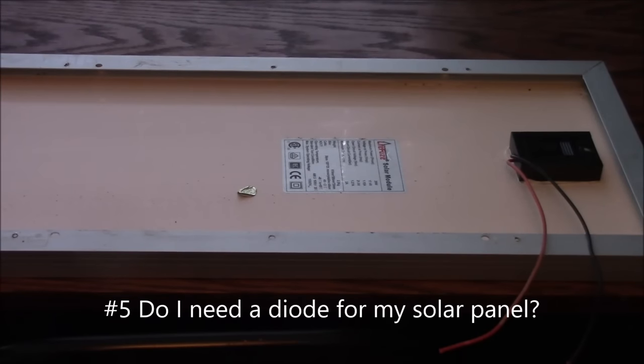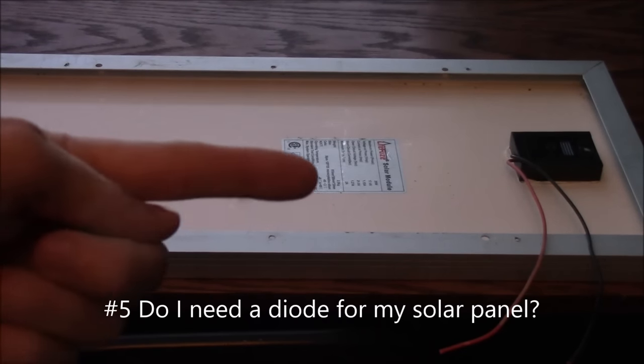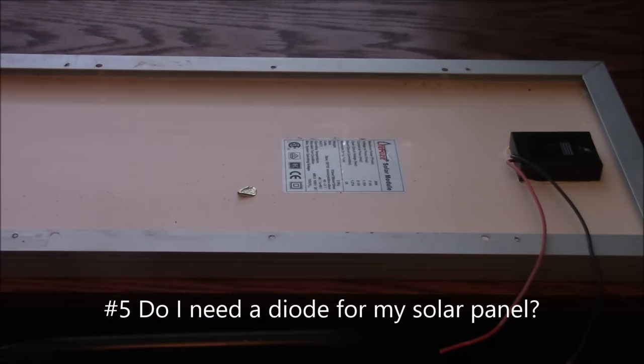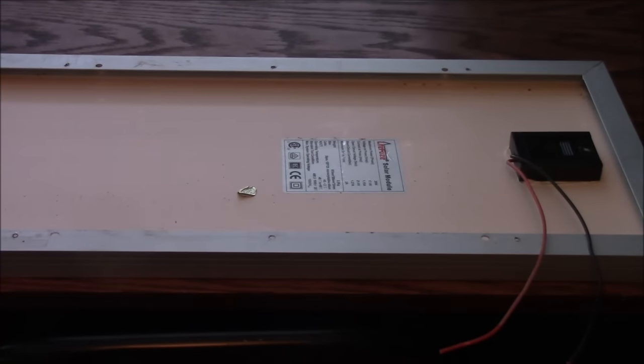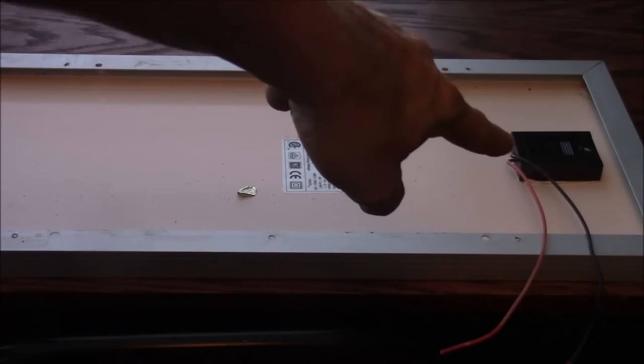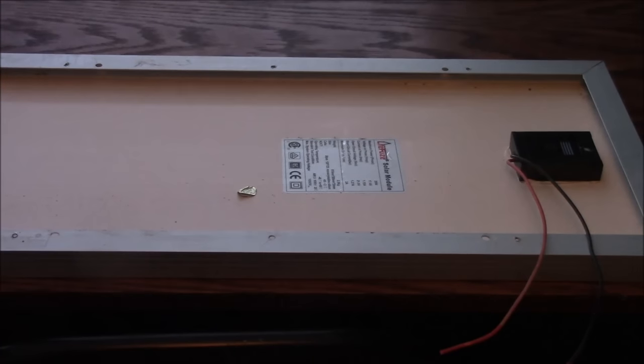Another question I get asked fairly frequently is do I need a diode in my solar panel system to block the power from back feeding into the panel at nighttime? The answer is no. Most solar panels either already have one, it'll usually be in this little black box in the back, or you just don't need one.